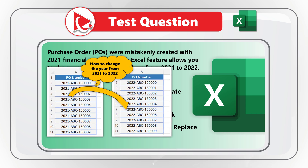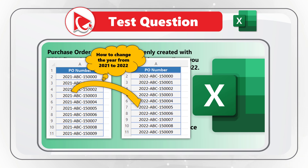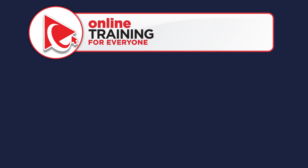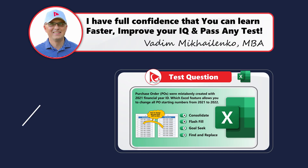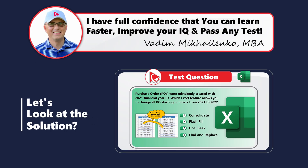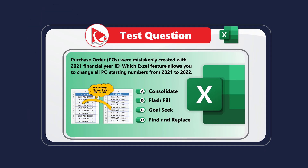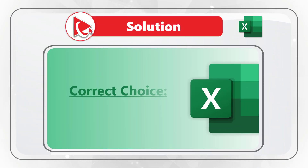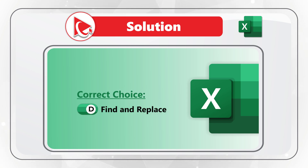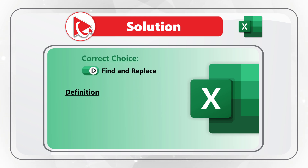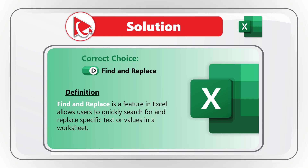Take a close look at the purchase order numbers in Microsoft Excel and see which feature you would choose to complete the action. The correct answer is choice D, Find and Replace, because the Find and Replace feature in Microsoft Excel allows users to quickly search for and replace specific text or values in the worksheet.